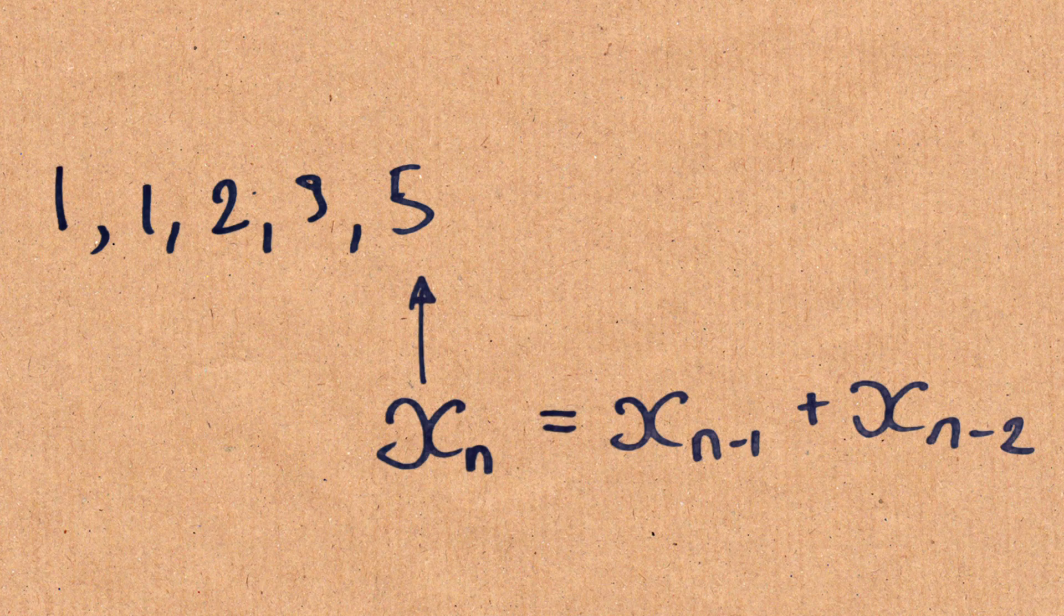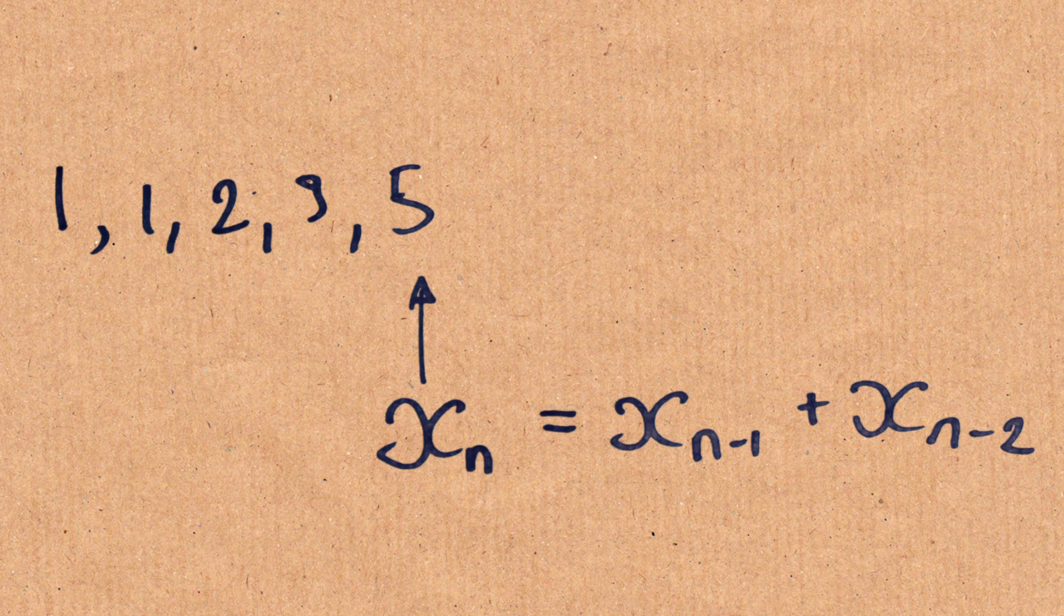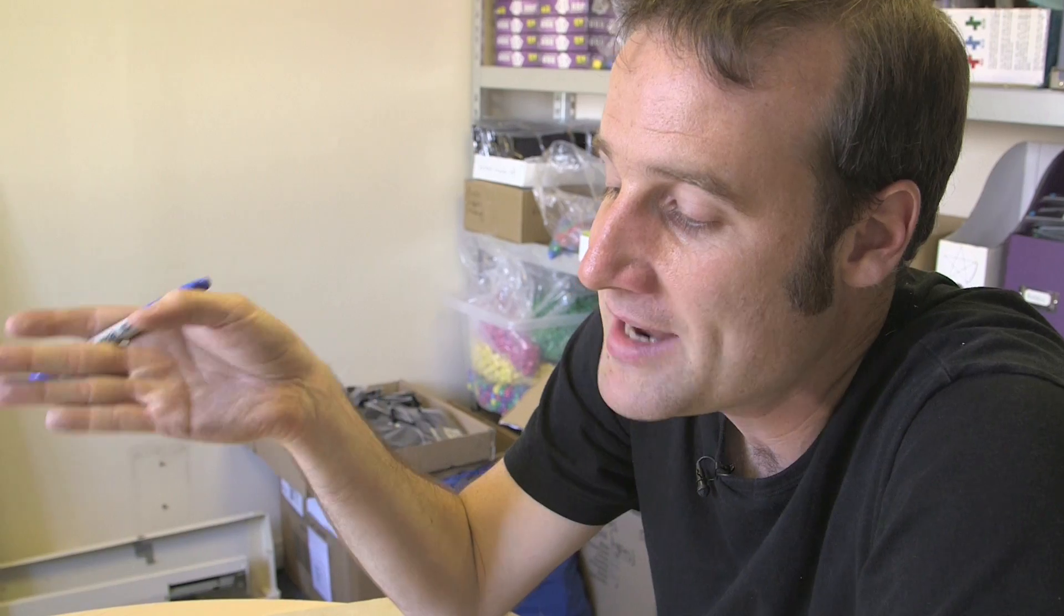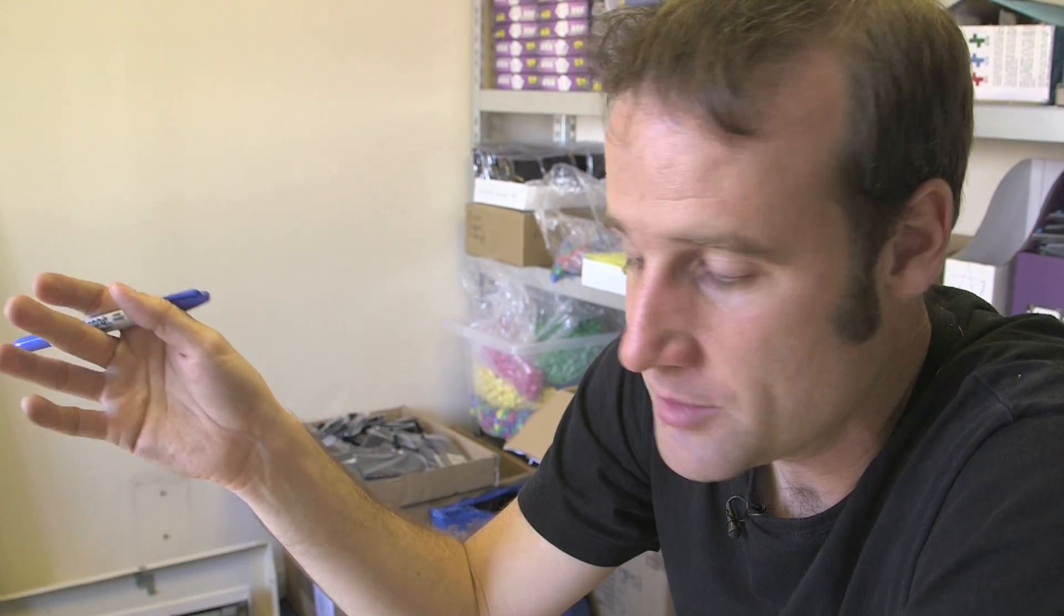And what we're trying to find ultimately is what is the ratio between two of the numbers. But importantly, because we're looking for the ratio it is approaching in the limit, it doesn't matter which two terms. It should be the same ratio, give or take, and if you do it for infinitely many, the same ratio for all of them, but for any two of the terms.